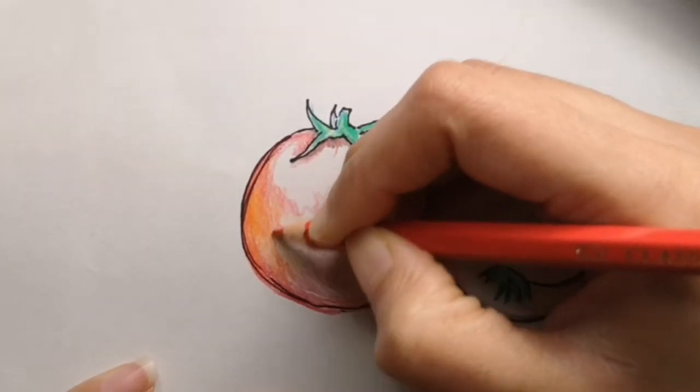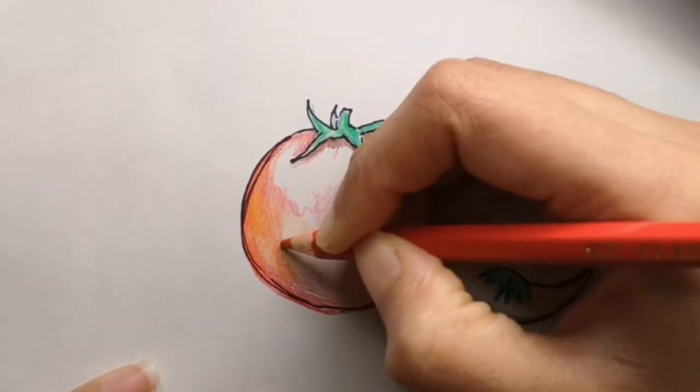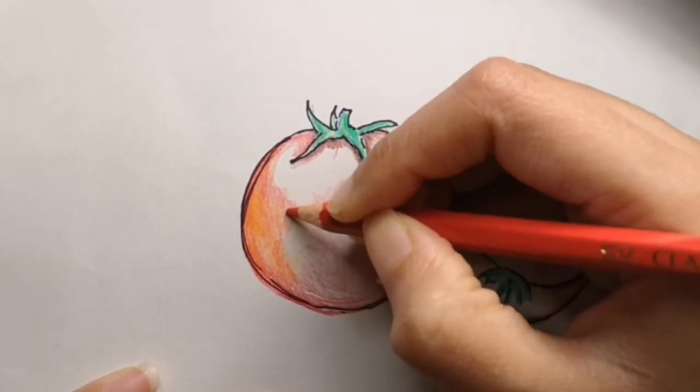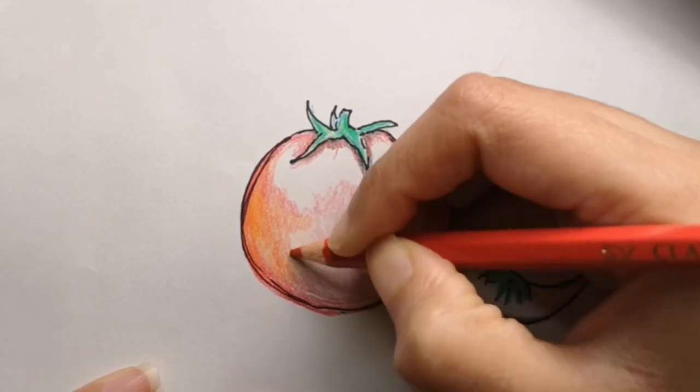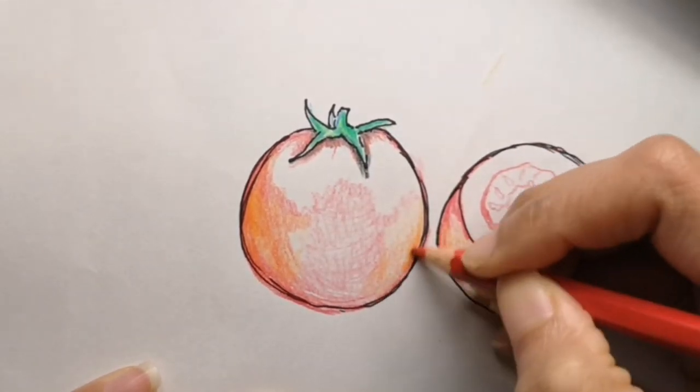The biggest tomato fight in the world happens each year in the small Spanish town of Buñol. The festival called La Tomatina—I hope I said that right. If I didn't, let me know in the comments below.